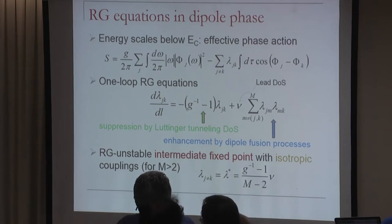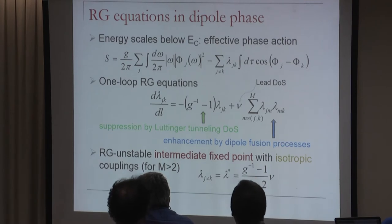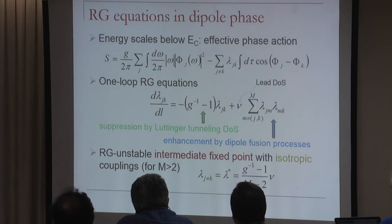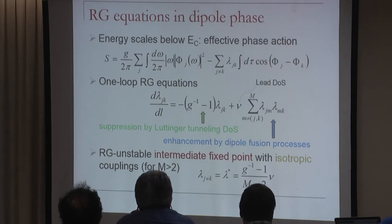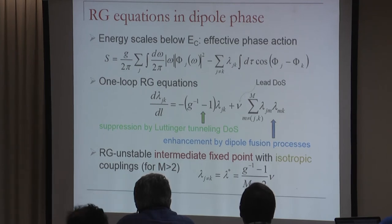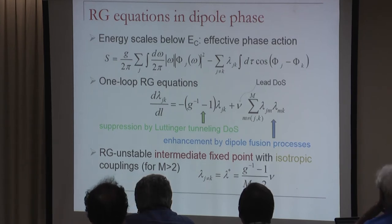We can interpret this as quantum Brownian motion for a particle with coordinates phi_1, phi_2, ..., in M-dimensional space, subject to ohmic dissipation with strength G—the interaction parameter in the leads—moving in a periodic potential corresponding to a hyper-triangular lattice in M dimensions. Using operator product expansion, one can immediately derive the one-loop RG equations governing how the couplings flow as we integrate over small energy shells and reduce the energy scale from E_C downward.